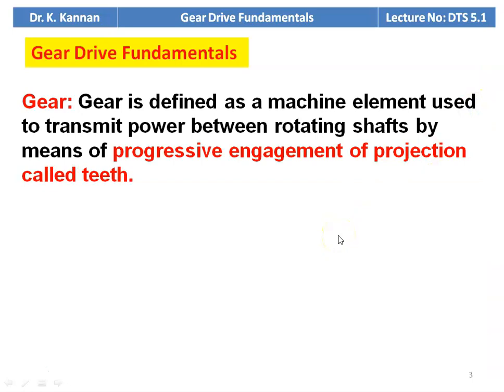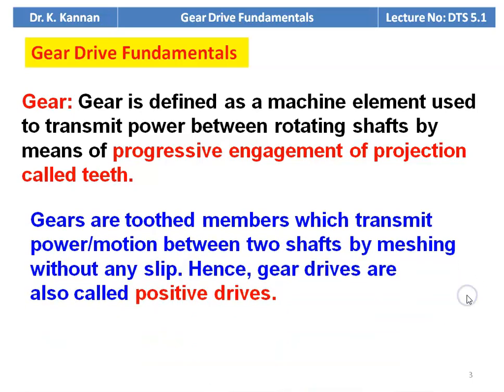The gear is defined as a machine element used to transmit power between rotating shafts by means of progressive engagement of projections called teeth. The gears are toothed members which transmit power or motion between two shafts by meshing without any slip. Hence, gear drives are called positive drives.